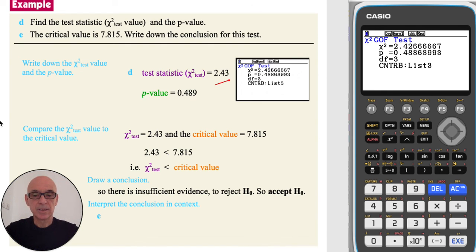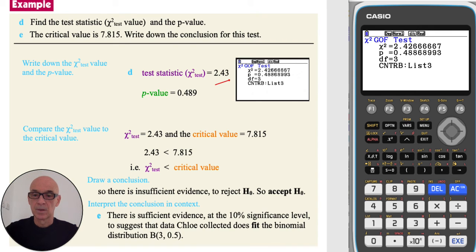And finally, to interpret the conclusion in the context of the question, we state that there is sufficient evidence at the 10% significance level to suggest that the data Chloe collected does fit the binomial distribution.